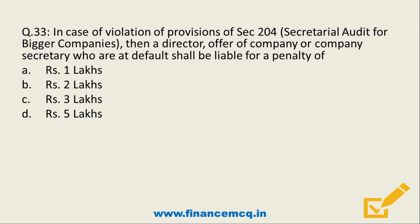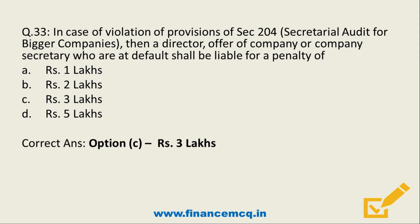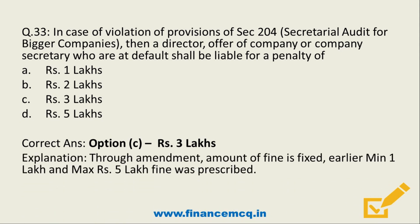Question 33. In case of a violation of section 204 — secretarial audit for bigger companies — a director, officer of a company or company secretary who is in default shall be liable for a penalty of: option A 1 lakh, option B 2 lakh, option C 3 lakh, or option D 5 lakh. The correct answer is option C — Rs. 3 lakh. Through this amendment, the fine amount is fixed; prior to that a minimum of 1 lakh and maximum of 5 lakh was prescribed. Now the fixed fine is Rs. 3 lakh for violation of section 204.